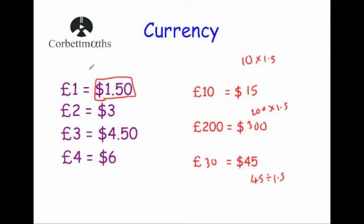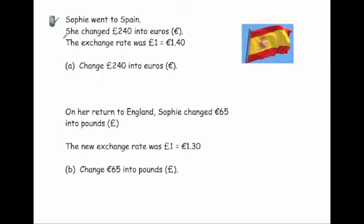Here's a typical question: Sophie went to Spain and changed 240 pounds into euros. The exchange rate was one pound equals 1.4 euros. Rather than writing out a list, a quick way is to multiply 240 pounds by the exchange rate number, 1.4. So 240 times 1.4 gives us 336 euros — that's how much she would get.